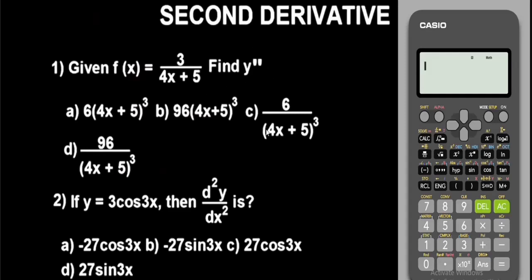Next, store a number — I highly recommend storing 2. You can choose any other number, but I recommend 2 to be on the safer side because I've practiced with 2 for a long time and have not found any errors with it. To store 2 in the calculator as X: press 2, then press shift and the STO button (which stands for store), then press the X button. It will indicate that 2 has been stored as X.